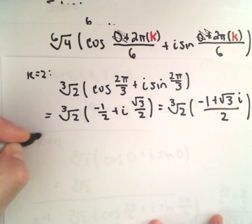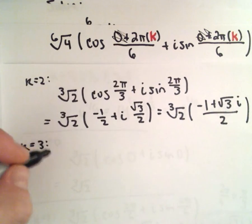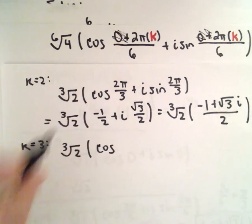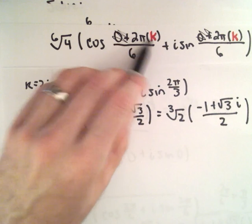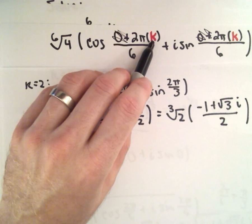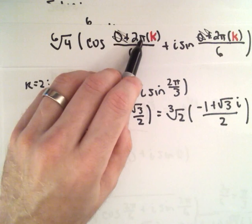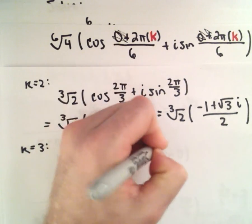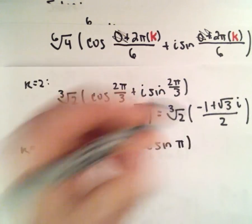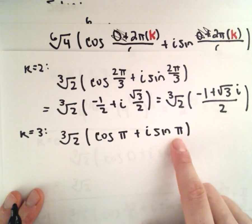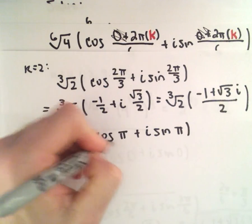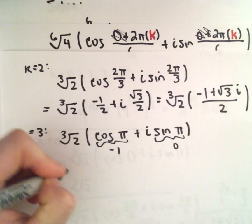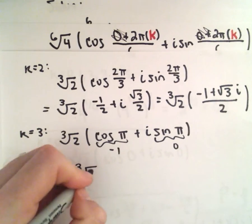For k equals 3, we substitute in and get 3 times 2 pi, which is 6 pi over 6, leaving us with cosine of pi plus i times sine of pi. Sine of pi is 0 and cosine of pi is negative 1. So in this case we'll be left with negative of the cube root of 2.